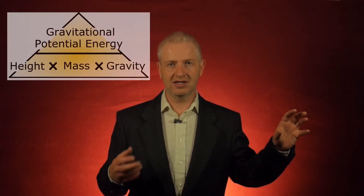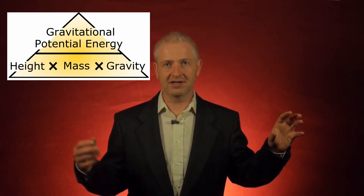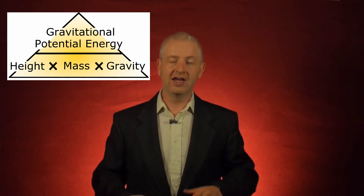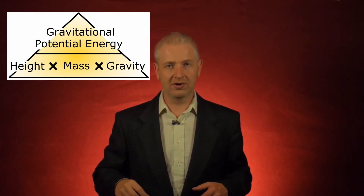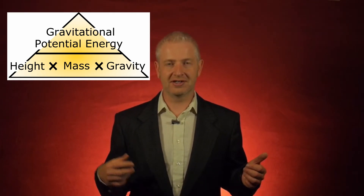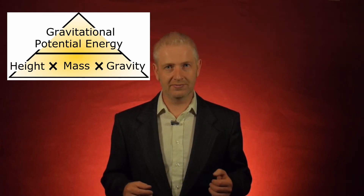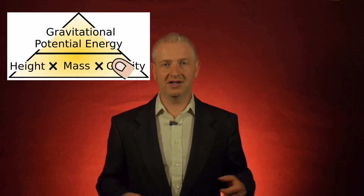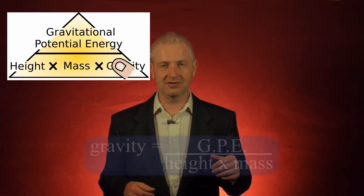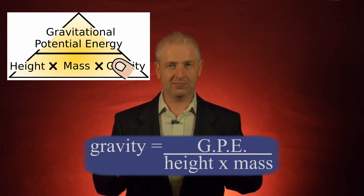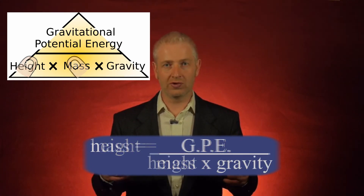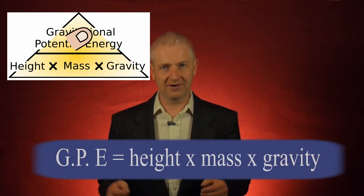What if it's slightly longer? What if I have something like gravitational potential energy — GPE equals mass times gravity times height, MGH? It's exactly the same thing. GPE goes at the top, and mass times gravity times height goes at the bottom. If I want gravity, I just cover it over — it's gravitational potential energy divided by mass times height. Any of those parts of the equation can be covered over, and what you're left with is the equation you need to find the values.